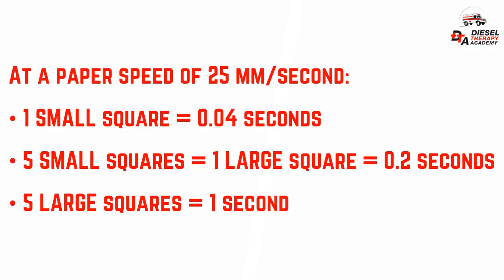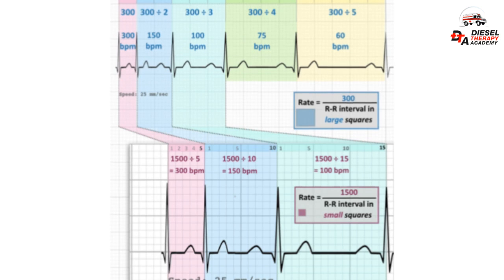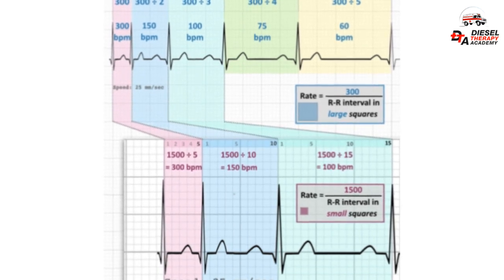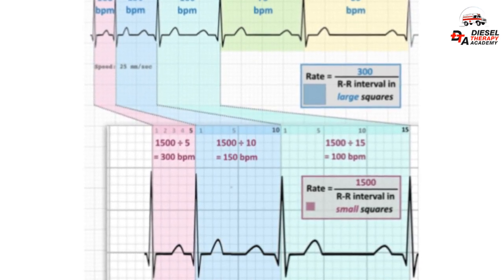At a paper speed of 25 millimeters per second: one small square equals 0.04 seconds; five small squares equals one large square equals 0.2 seconds; five large squares equals one second. An ECG rhythm strip equals 250 small squares, equals 50 large squares, equals 10 seconds. To calculate beats per minute, 1,500 small squares equals 300 large squares equals one minute. There are multiple methods to estimate the rate. We can calculate beats per minute by dividing 1,500 by the number of small squares between two R-waves.